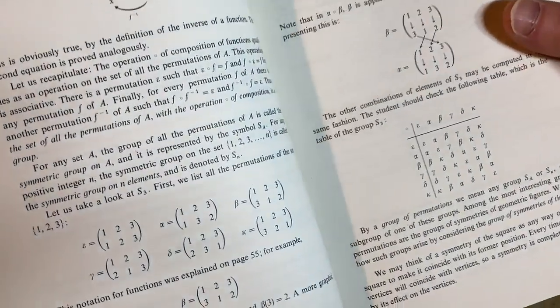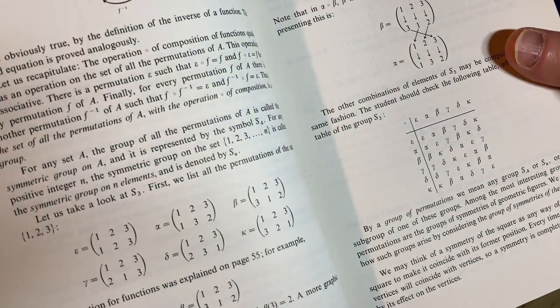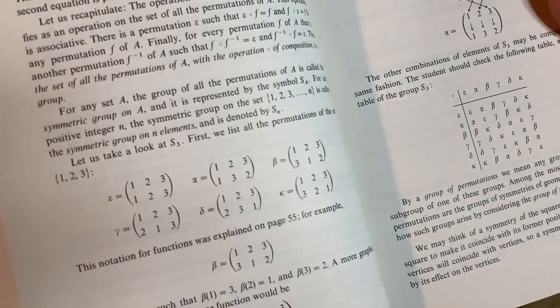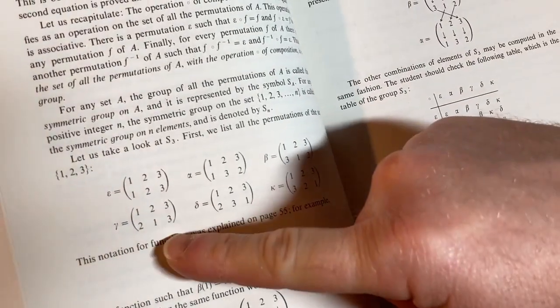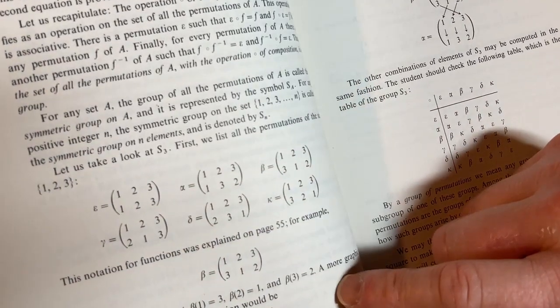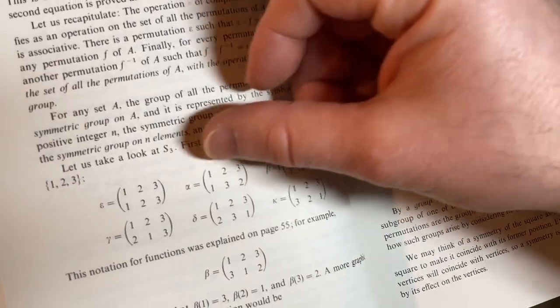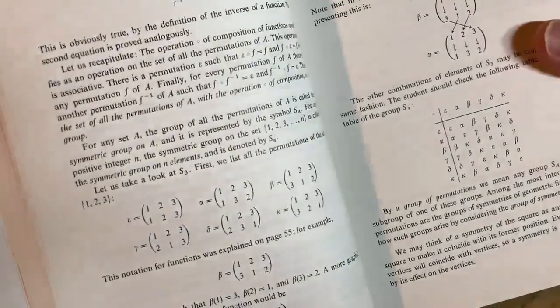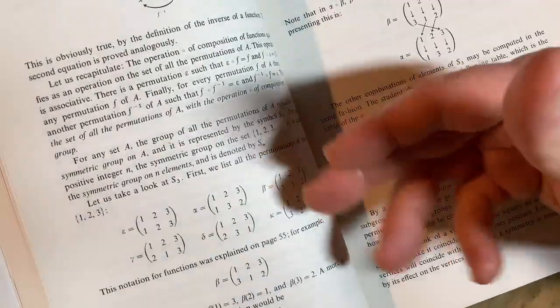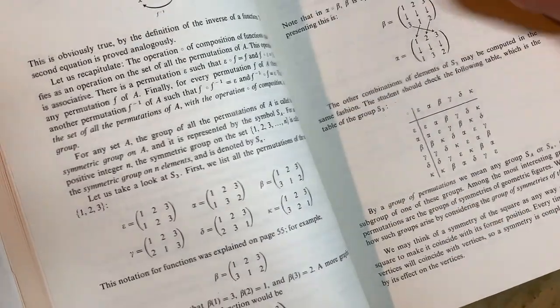These are permutations in S3. That's a symmetric group on three elements. SN would be the symmetric group on N elements. So here you have some permutations. So this permutation here, epsilon, takes 1 to 1, 2 to 2, 3 to 3. It's the identity permutation. Alpha takes 1 to 1. It takes 2 to 3. It takes 3 to 2. What do I mean by that? I mean the first row is the inputs, the domain. The second row is the outputs, the codomain. But they're both the same set. So it's taking the set 1, 2, 3 into the set 1, 2, 3.